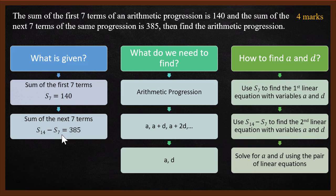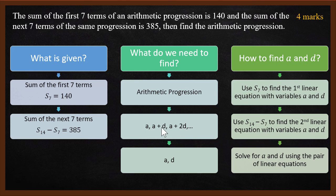So this is what is given. What are we supposed to find? We need to find the arithmetic progression. Arithmetic progression means we need to find a sequence of numbers which is a, a plus d, a plus 2d, and so on. A is the first term, d is the common difference. To find this sequence, we need a and d. If you know the first term and the common difference, then you can find the sequence. How do we find a and d? That is the next part.